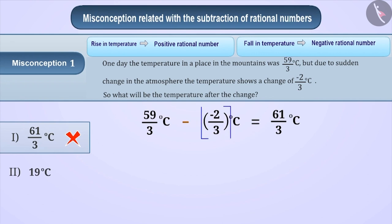Let's get the right answer. Here, the change is given in negative rational numbers. Can you tell me what this means? Absolutely correct. The negative sign tells us that the temperature is declining. If the temperature is falling, the answer cannot be 61 by 3 because it is more than 59 by 3.